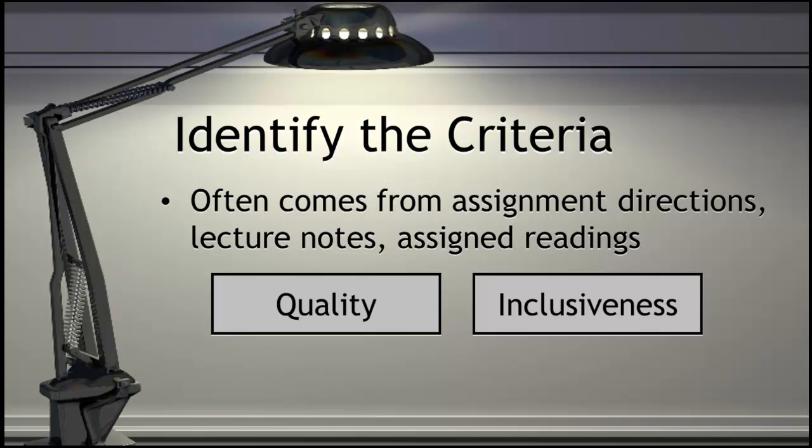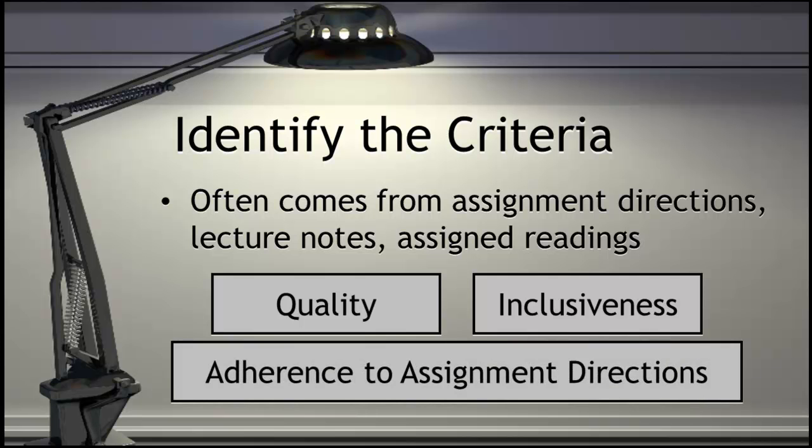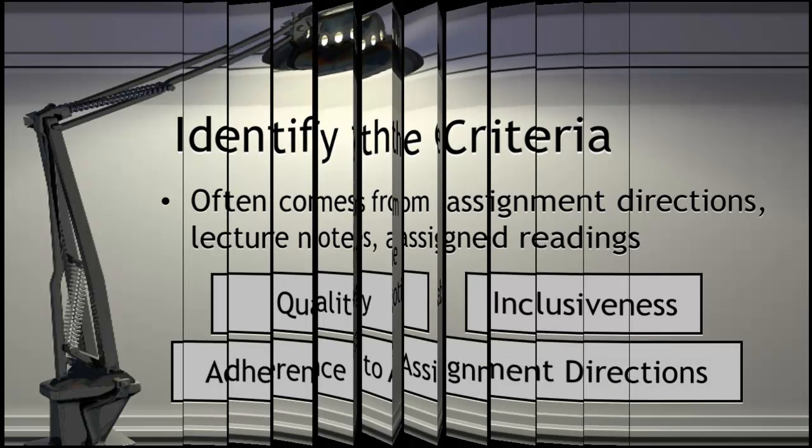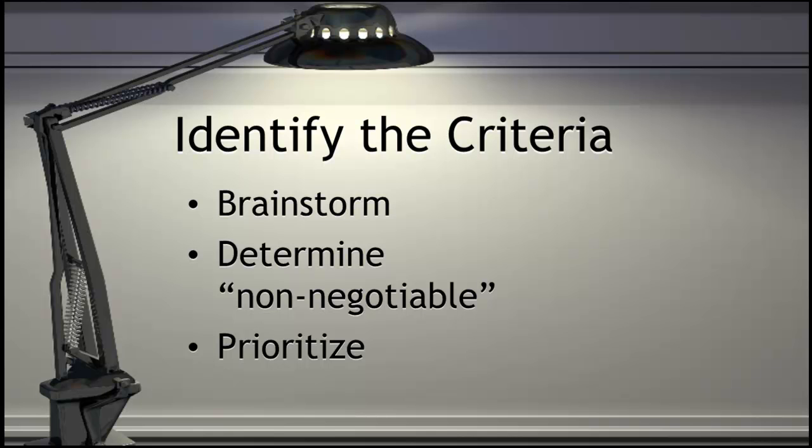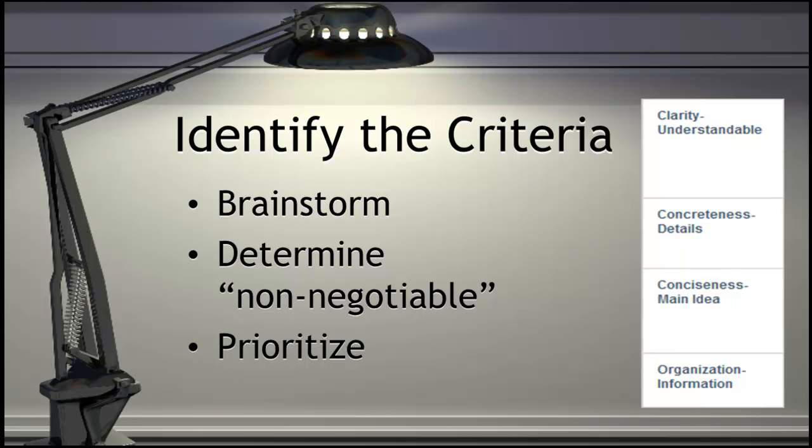All parts of the assignment are addressed. Adherence to assignment directions. Try brainstorming all of the possible elements or things that could be assessed in the assigned task. Determine which are non-negotiable and then prioritize them. These are your criteria, the row headers in your rubric.